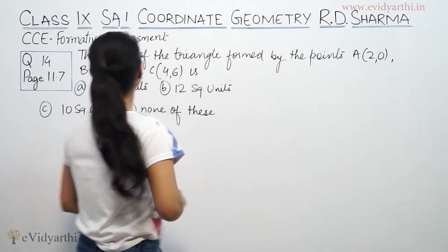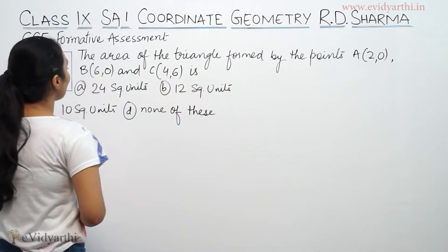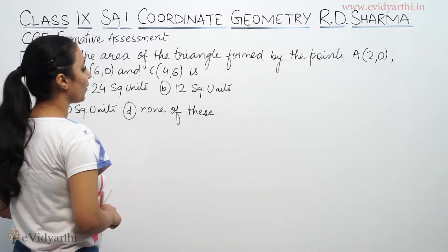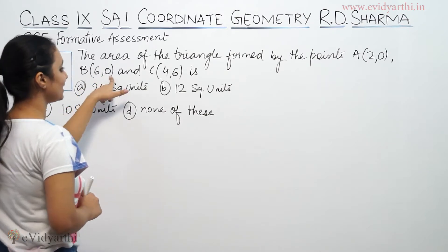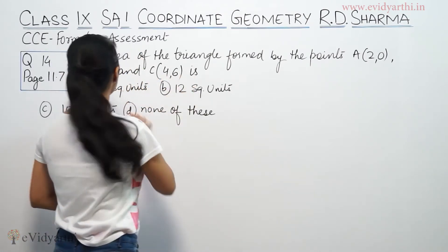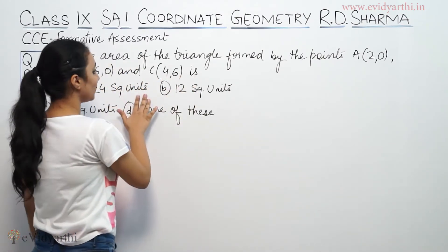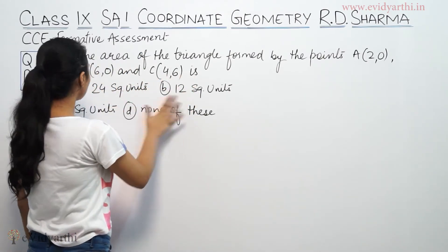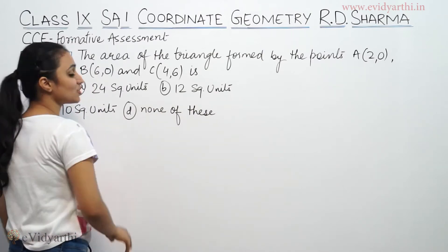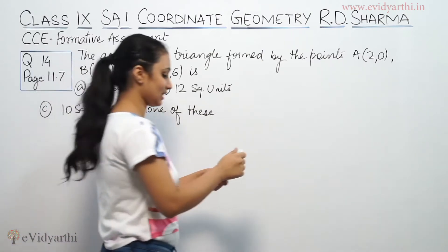This says: the area of the triangle formed by the points A(2,0), B(6,0) and C(4,6) is — 24 square units, 12 square units, 10 square units, or none of these.